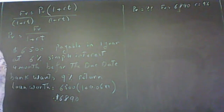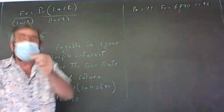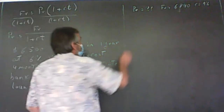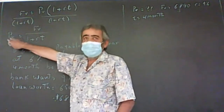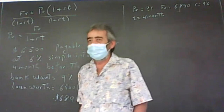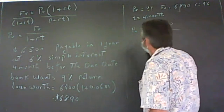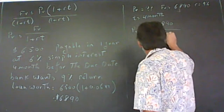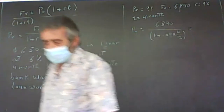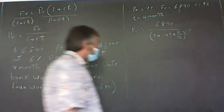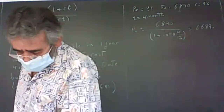The note is due in four months — Virginia needed the money four months before it was due, so the bank is only lending money for four months. T = 4/12. Using PV = FV / (1 + R × T): PV = 6,890 / (1 + 0.09 × 4/12), which gives $6,689.32.